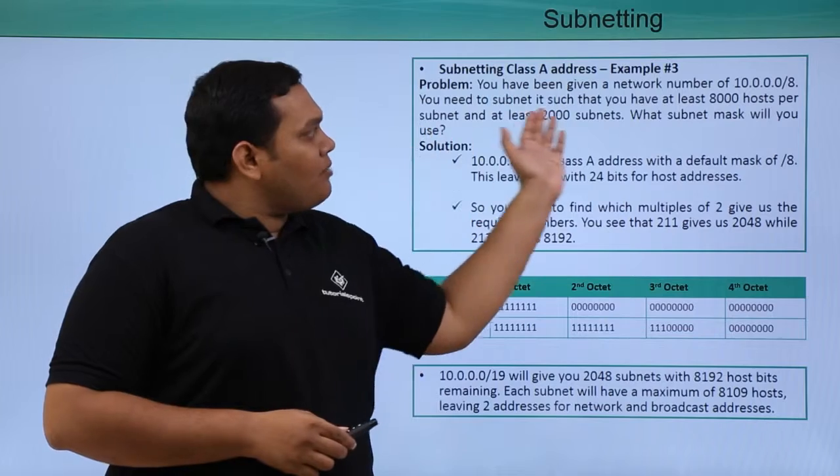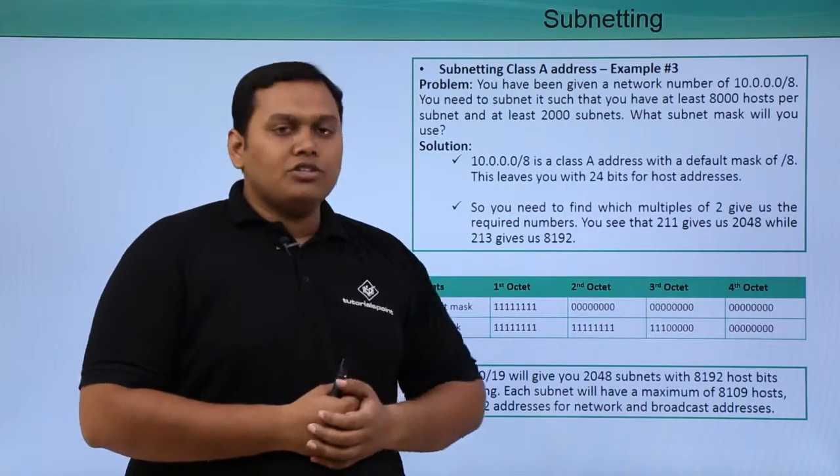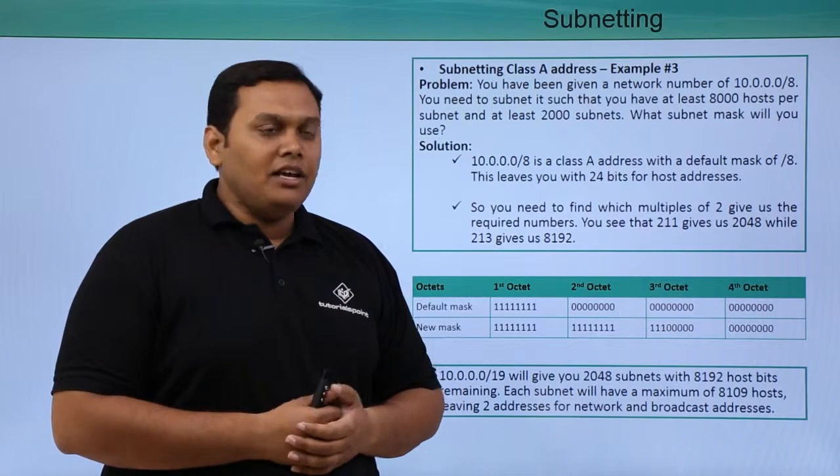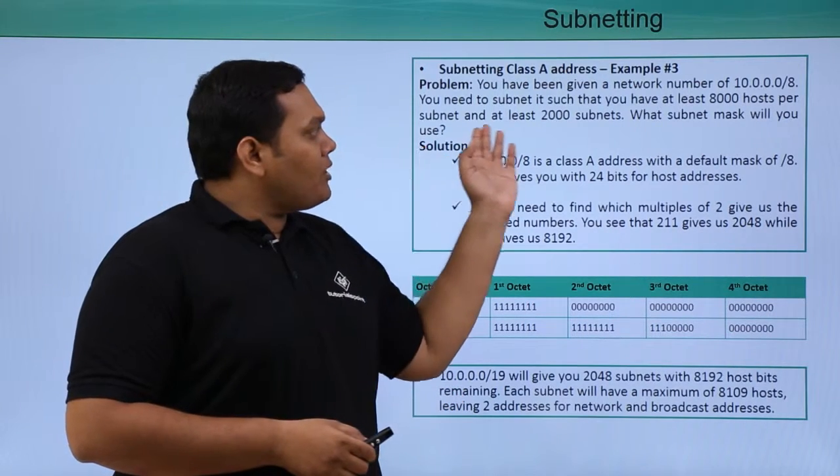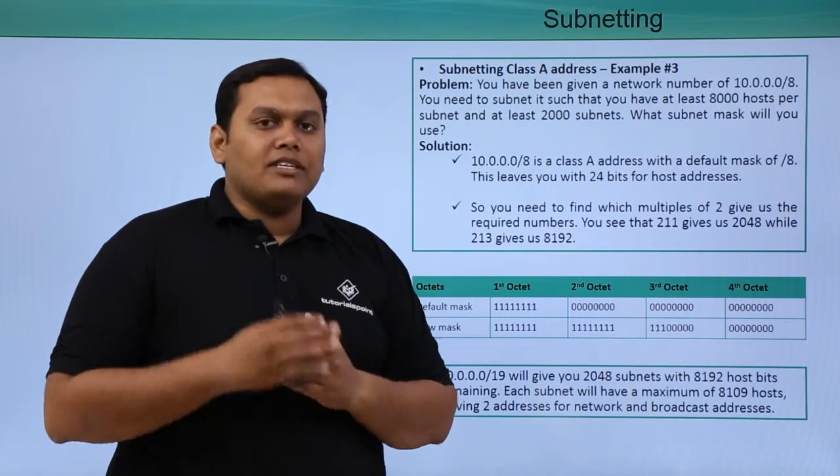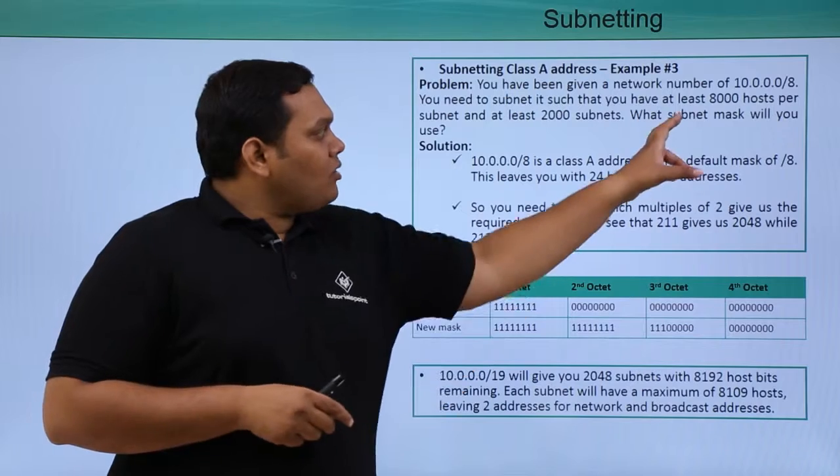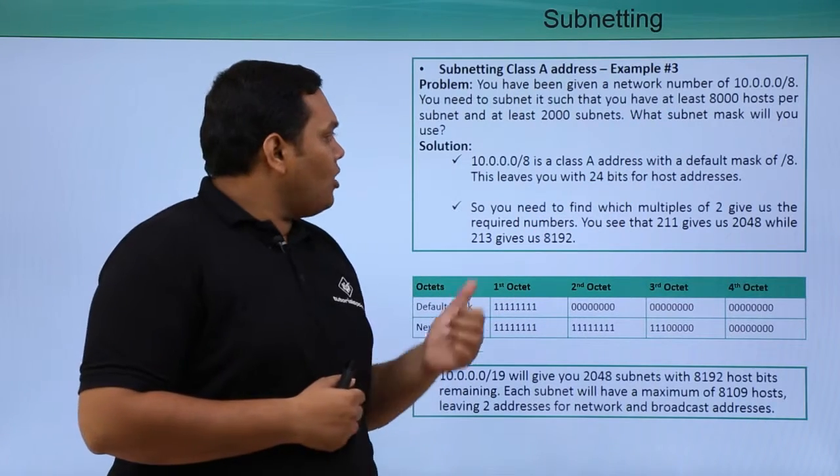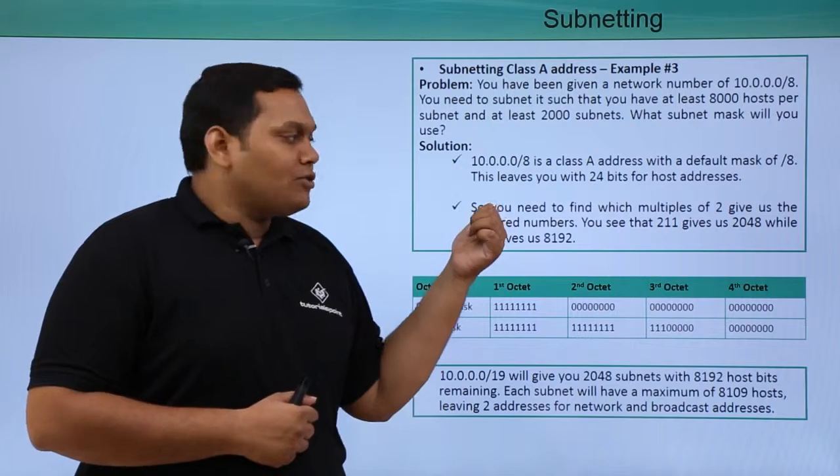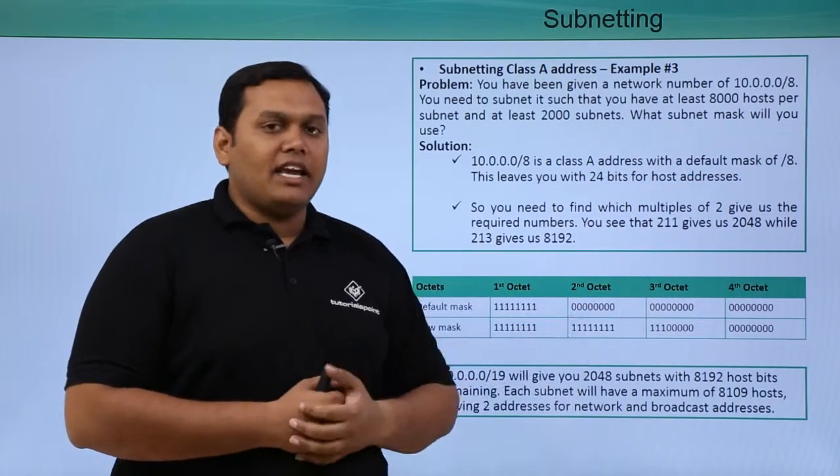Here you can see the same example given in a different scenario. This network is 10.0.0.0/8, but here the minimum requirement of hosts is 8000 and the minimum requirement of subnets is 2000. For each subnet you require 8000 hosts per subnet.